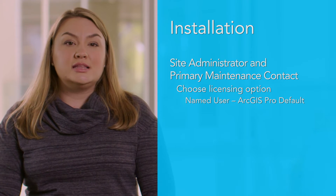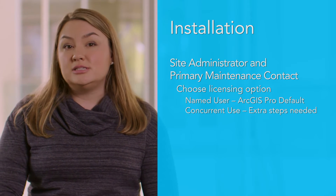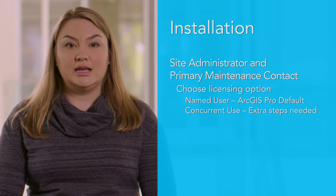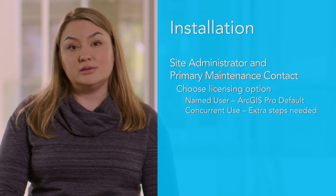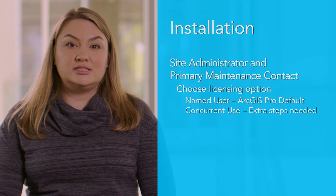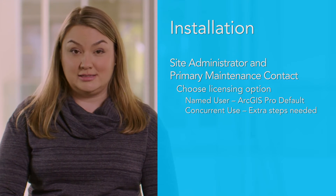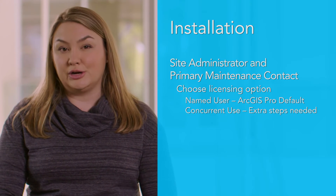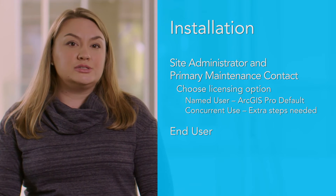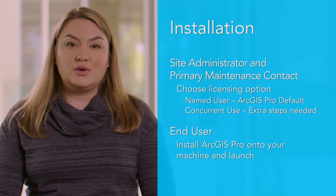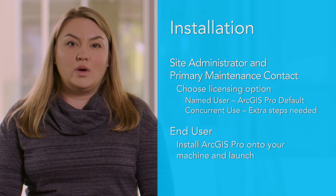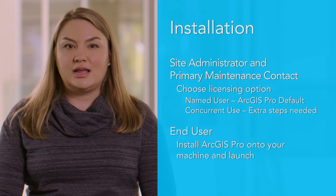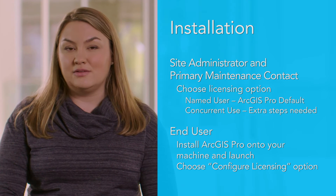If you decide on using the concurrent use or hybrid option, you'll need to take additional steps. First, you'll need to provision the licenses through MyEsri by allocating the number of licenses for concurrent use. The standard provisioning and authorization steps apply and can be found at desktop.arcgis.com. Then you'll need to notify your end users which method to use for logging into ArcGIS Pro. If you're an end user, install ArcGIS Pro on your machine from the location provided by your site administrator. Once your site administrator has configured concurrent use licensing for ArcGIS Pro, simply launch the application and choose the configure licensing option to pick your license level to get started.